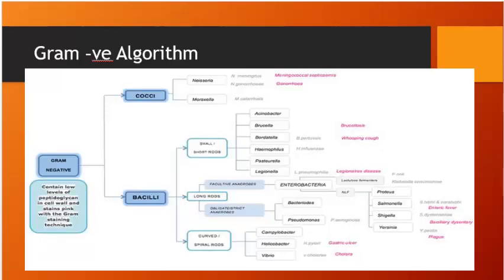The gram negative algorithm divides bacteria into cocci and bacilli. In cocci we have Neisseria gonorrhoeae, Neisseria meningitidis, and Moraxella catarrhalis (flu-like/upper respiratory tract infection). In bacilli: small rods include Acinetobacter (in HACEK group for human bites), Brucella (causes brucellosis with orchitis), Bordetella (causes pertussis — whooping cough, incidence reduced by immunization), Haemophilus, Pasteurella, and Legionella.